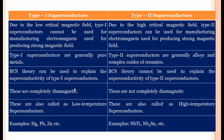Type 1 superconductors are also called low temperature superconductors because their critical temperature is low compared to type 2 superconductors. Type 2 superconductors are called high temperature superconductors. Examples of type 1 superconductors are mercury, lead, zinc, etc. Examples of type 2 superconductors are alloys such as niobium-titanium and niobium-tin, etc.